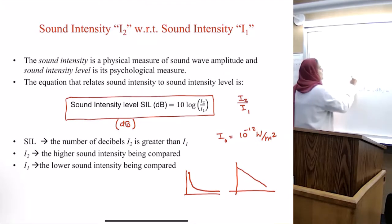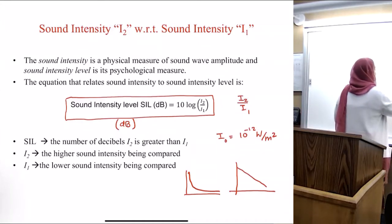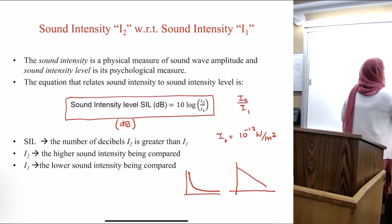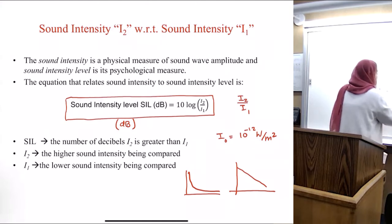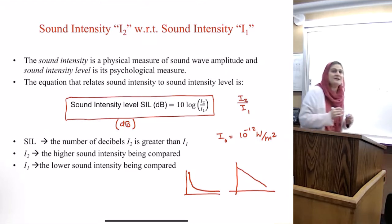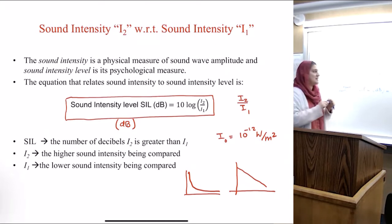SWL is called sound power level. And SPL is called sound pressure level. Sound power level is 10 log of W over W₀, where this is a wattage. Whereas sound pressure level is 20 log of P over P₀. Just write these down somewhere all together, and then we will discuss.